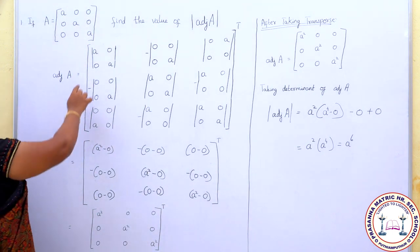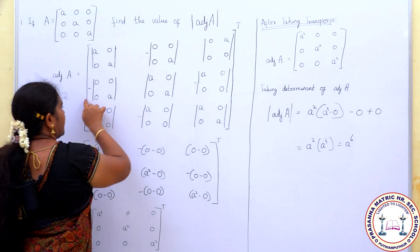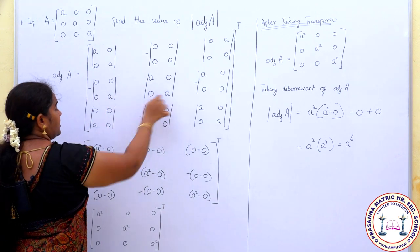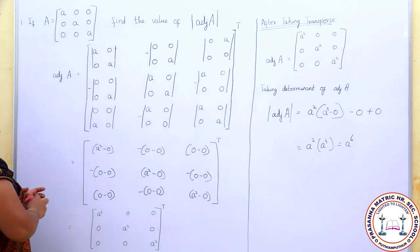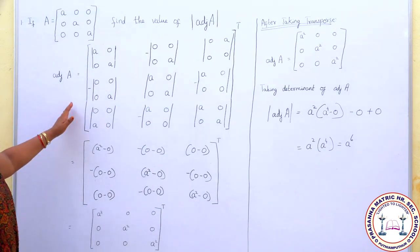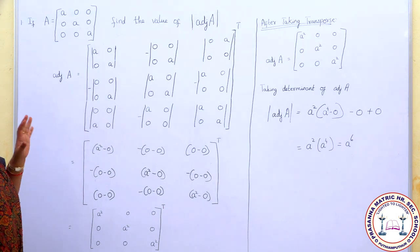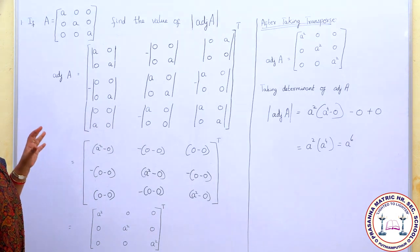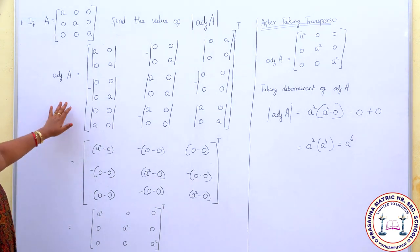The sign convention for cofactors alternates as plus, minus, plus, minus, plus, minus. It is better to use this method always, as it will give you the minimum number of errors.